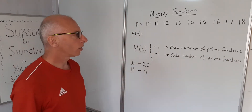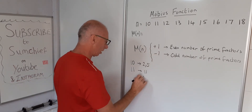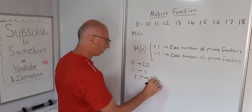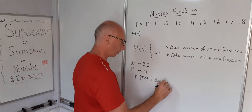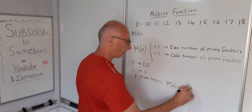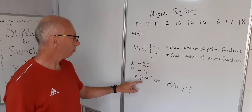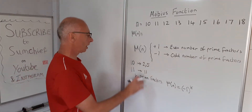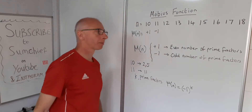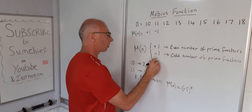If we assign k as the number of prime factors, the formula is minus 1 to the power of k. So minus 1 squared gives us plus 1, and minus 1 to the power of 1 gives us negative 1. We've already worked out 10 gives plus 1 and 11 gives minus 1. Now there's a third option, which gives 0.